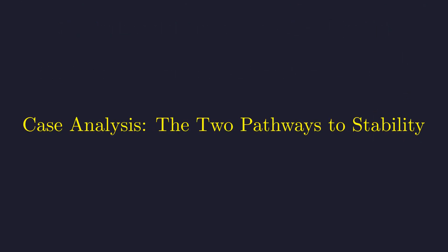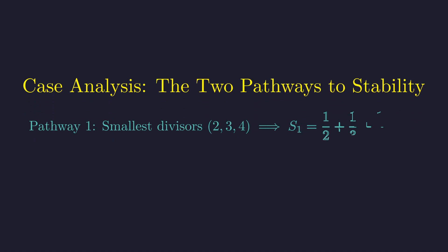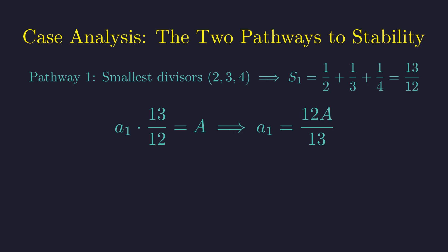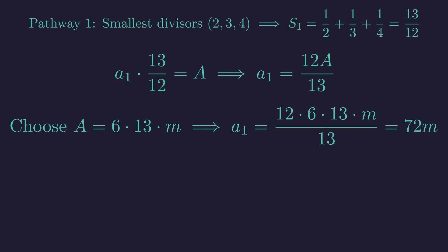Let's analyze these two possibilities for S1 to find the corresponding values of A1. First, assume the smallest divisors of A1 greater than 1 are 2, 3, and 4. Then S1 equals 13/12. For A1 to be an integer, we set A1 times 13/12 equal to a stable number A. This gives A1 equals 12A/13. Thus, A must be a multiple of 13. We require A to be a stable number and a multiple of 13, so we can write A as 6 times 13 times m, where m satisfies the stability conditions. Substituting this into our equation for A1 gives 72m.